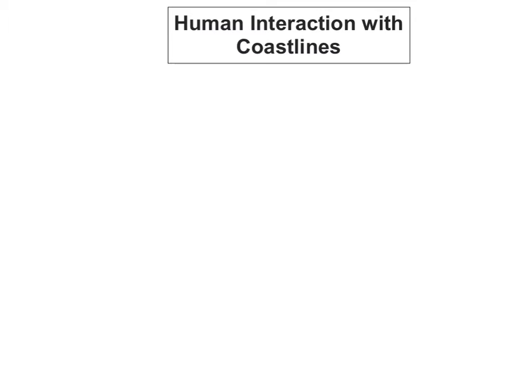Humans interact with coasts in a variety of different ways. We interact with coastlines because we look to the sea for food, we look to the sea as a source of energy, we use the sea for transportation, and we use the sea for leisure activities.